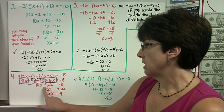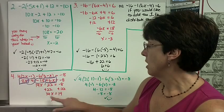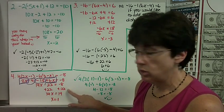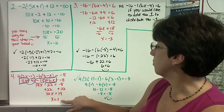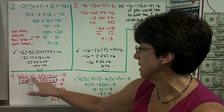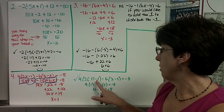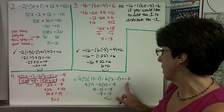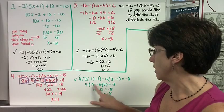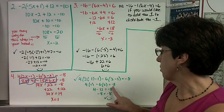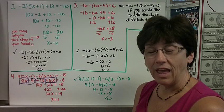Now I have 14x minus 22. The inverse of subtraction is addition, so I add 22 to both sides. 14x equals 14, because negative 8 plus 22 is 14. Divide by 14, and x equals 1. To check, plug 1 in for every x: 4 times the quantity of 2 times 1 minus 1, minus 6 times the quantity of 3 minus 1, equals negative 8. 2 times 1 minus 1 is 1, and 3 minus 1 is 2. 4 times 1 is 4, and negative 6 times 2 is negative 12. 4 minus 12 equals negative 8. Negative 8 equals negative 8.